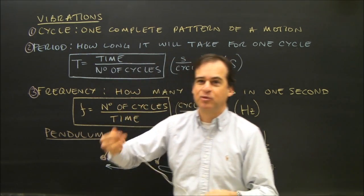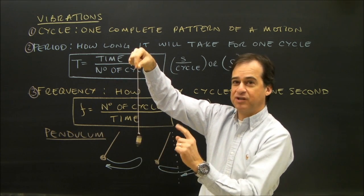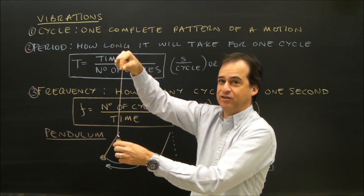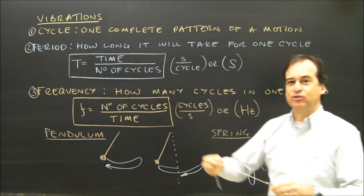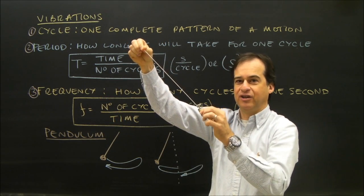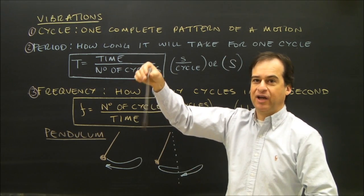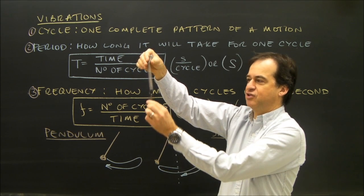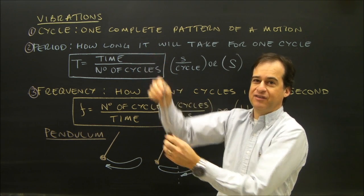An example would be if you have a pendulum and you swing it back and forth, one cycle is the pendulum from rest position going this way, all the way back past rest, and all the way back to the rest position. That's shown here. You could also describe one cycle of a pendulum by saying it's over here and back over to here. If it was something like a spring vibrating up and down, then if the rest position is here and I pull it down, it's up to its highest point, down to its lowest point, and back up to where it started. That's one cycle.